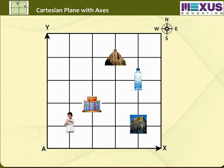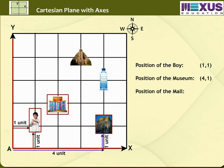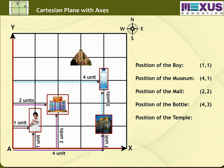First, locate the position of the boy. He is one unit away from the vertical line AY and one unit away from the horizontal line AX. Hence, his position is represented by a point (1,1). Similarly, the position of the museum is represented by the point (4,1), the position of the mall is (2,2), the position of the bottle is (4,3), and the position of the temple is (3,4).